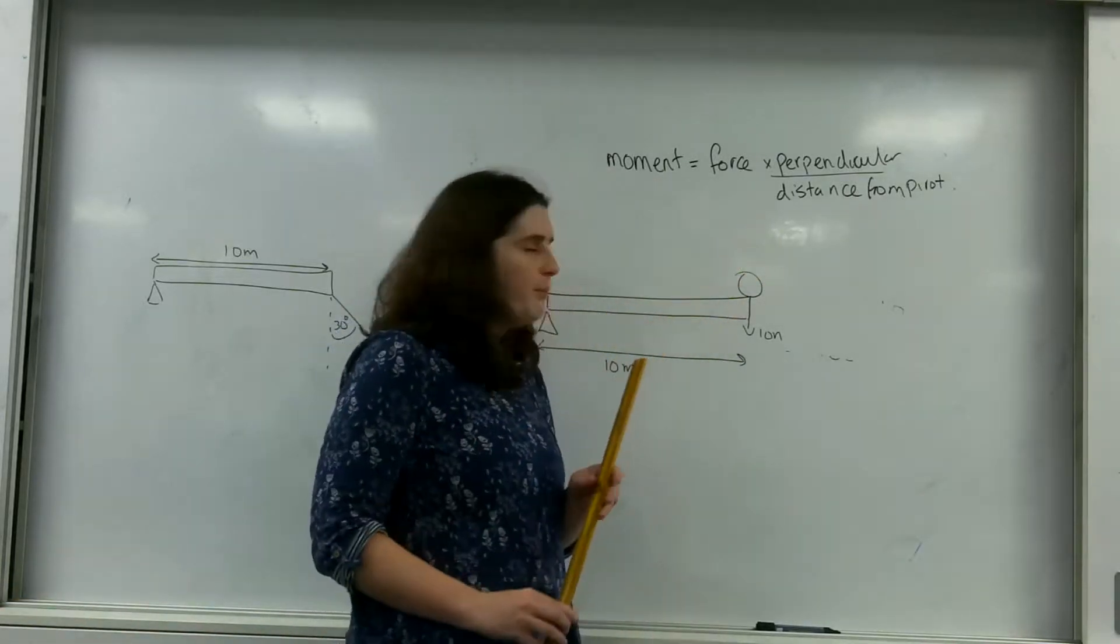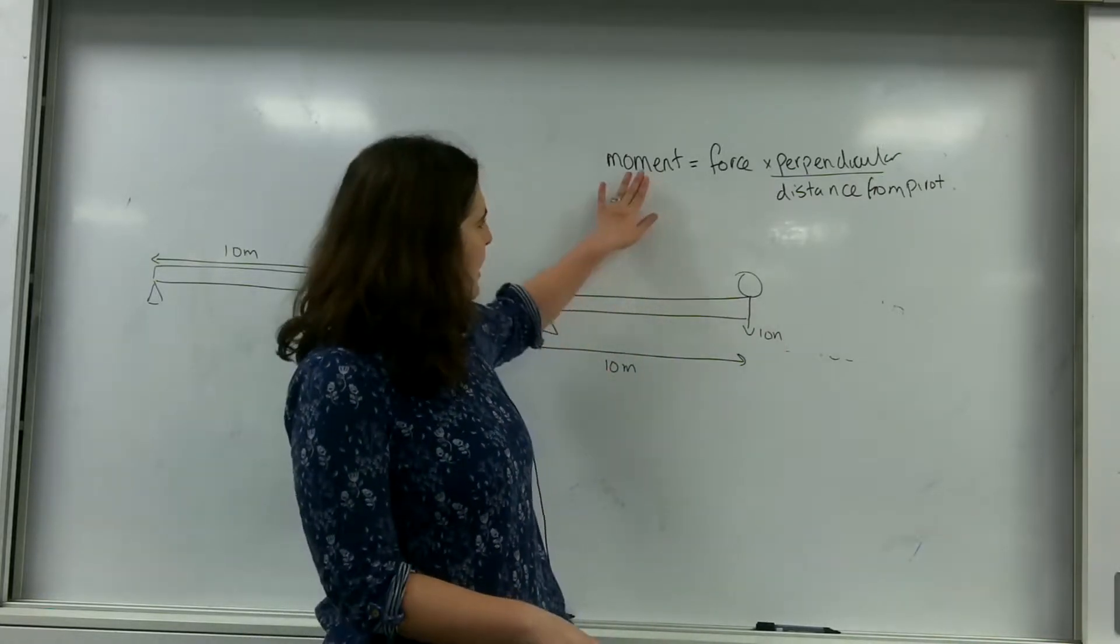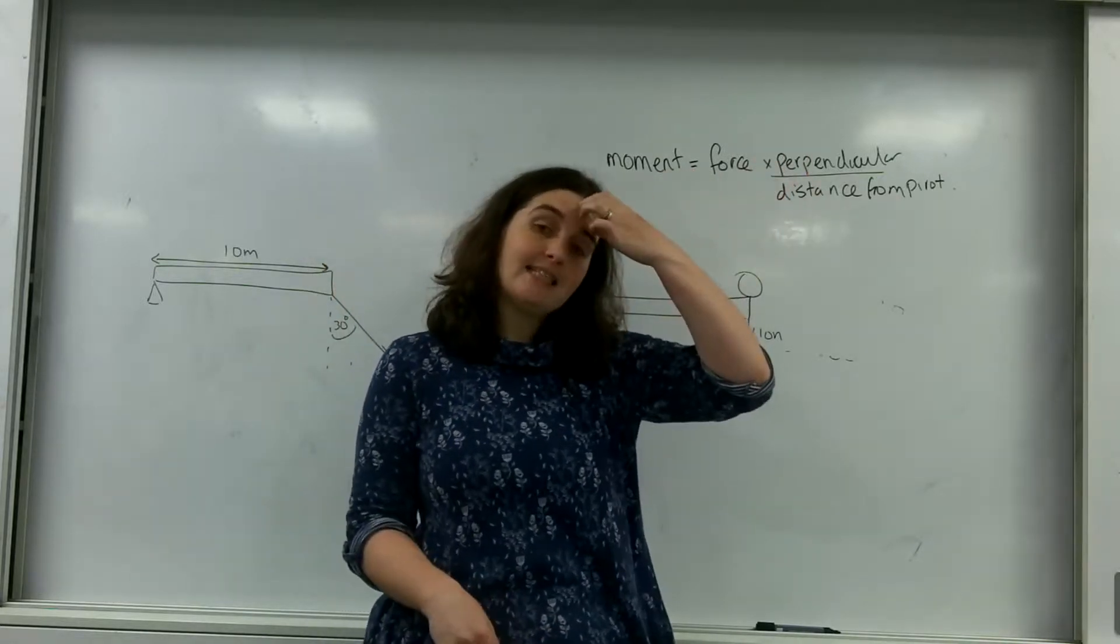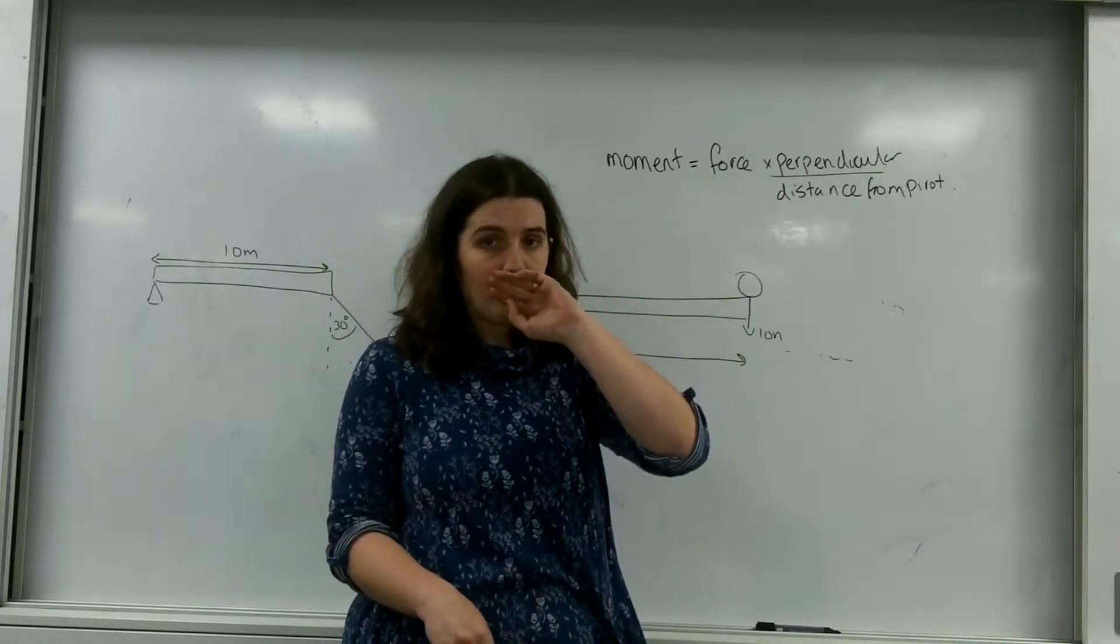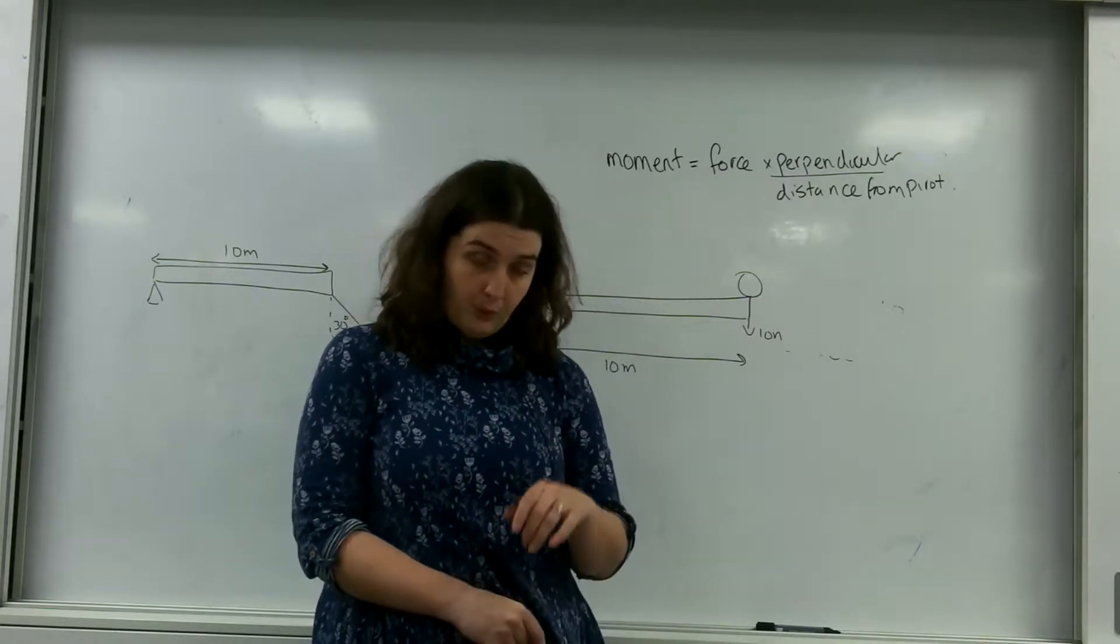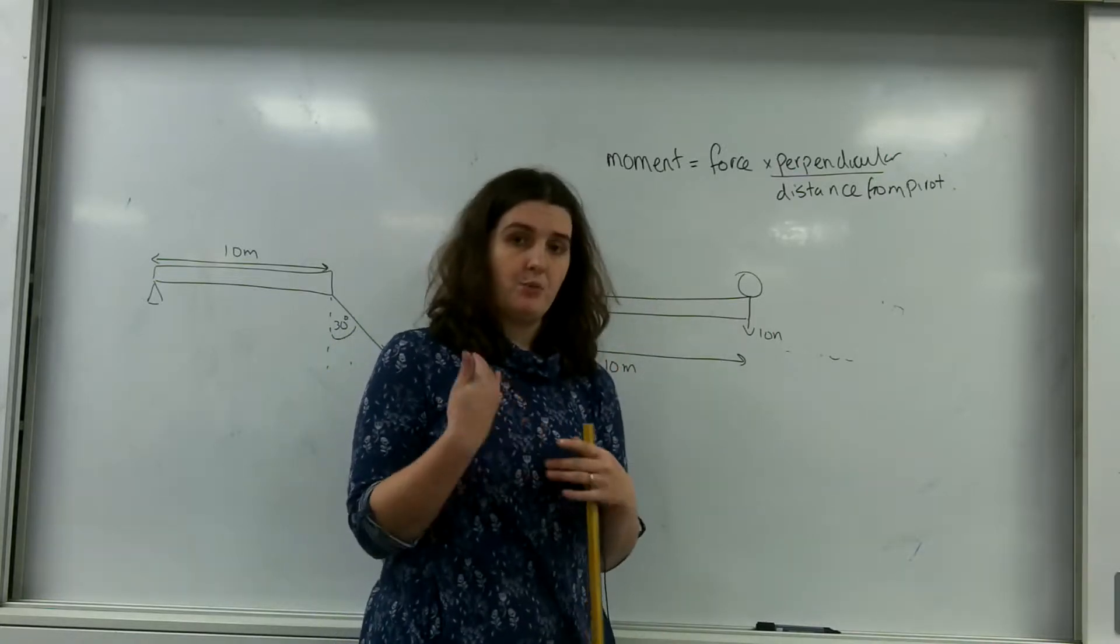Now the formula for moment, and this is actually really important that you get the correct terminology, is that a moment is the force times the perpendicular distance from the pivot. Now the reason you have to be very specific is because there is another formula that also, when boiled down to, is just force times distance, and that is work done.